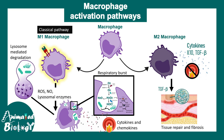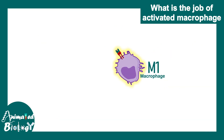The M1 macrophage is activated by a pathway called the classical pathway, and the M2 macrophage gets activated by an alternate pathway. The cytokines that trigger the activation of M1 and M2 macrophages are different. Let's see how M1 macrophages are associated with chronic inflammation.